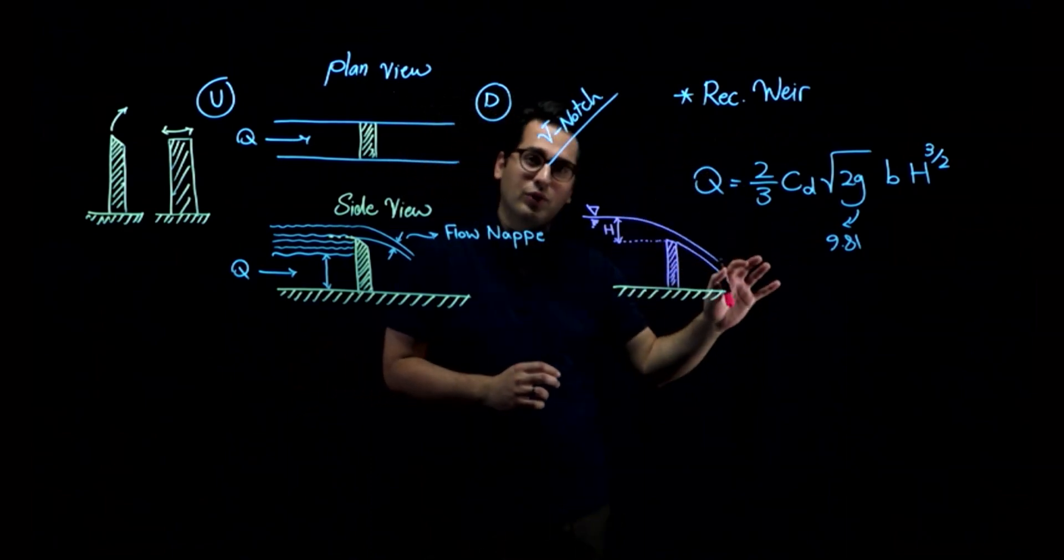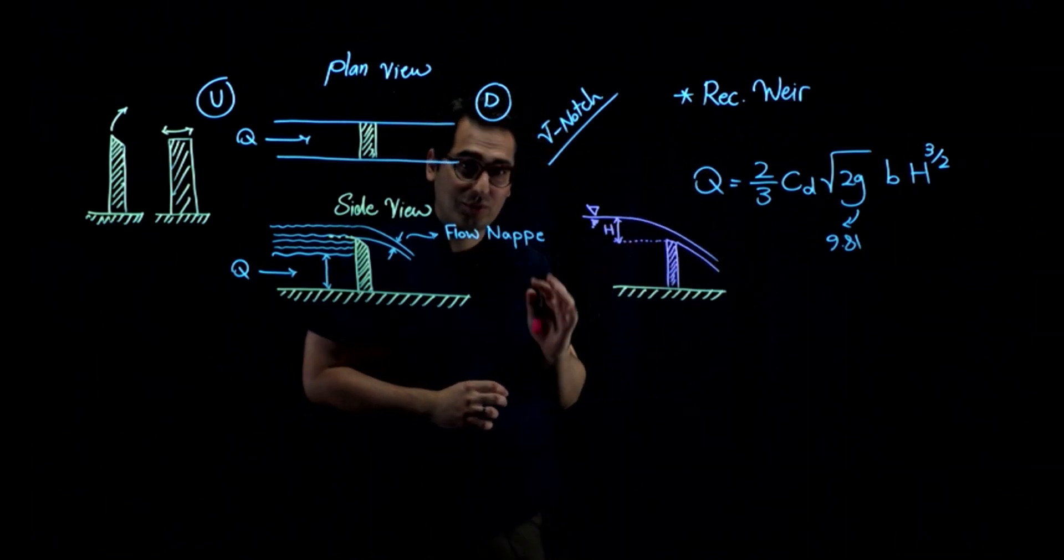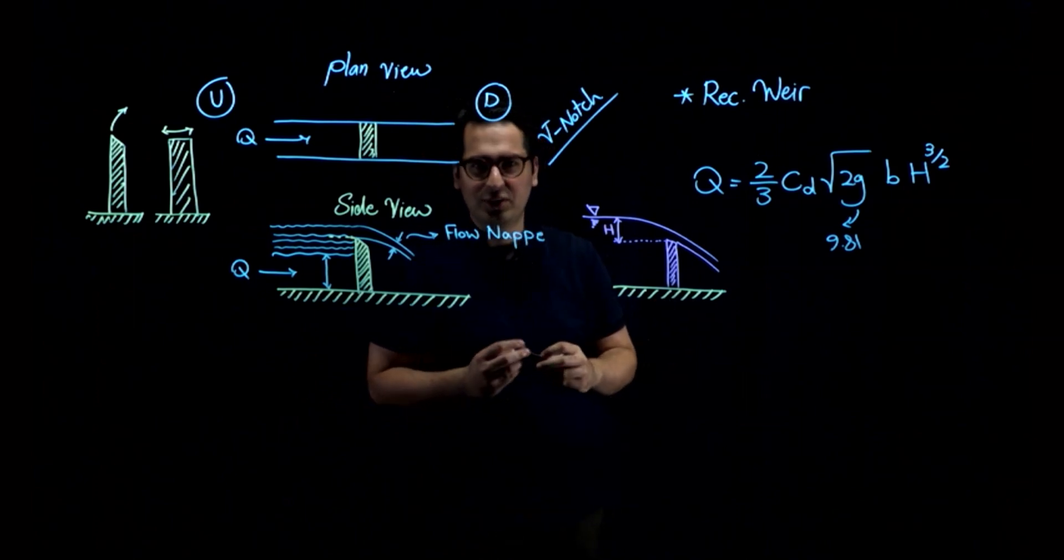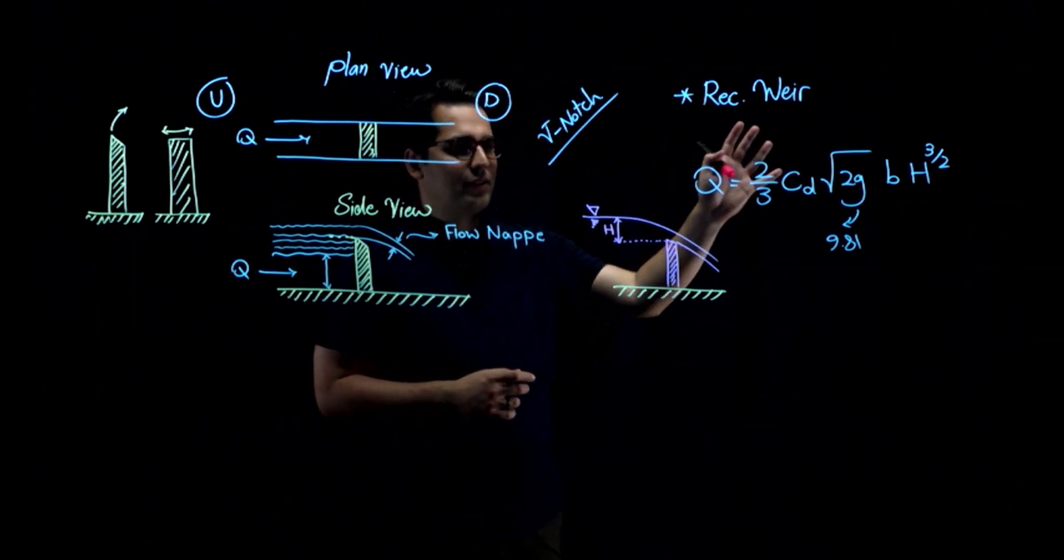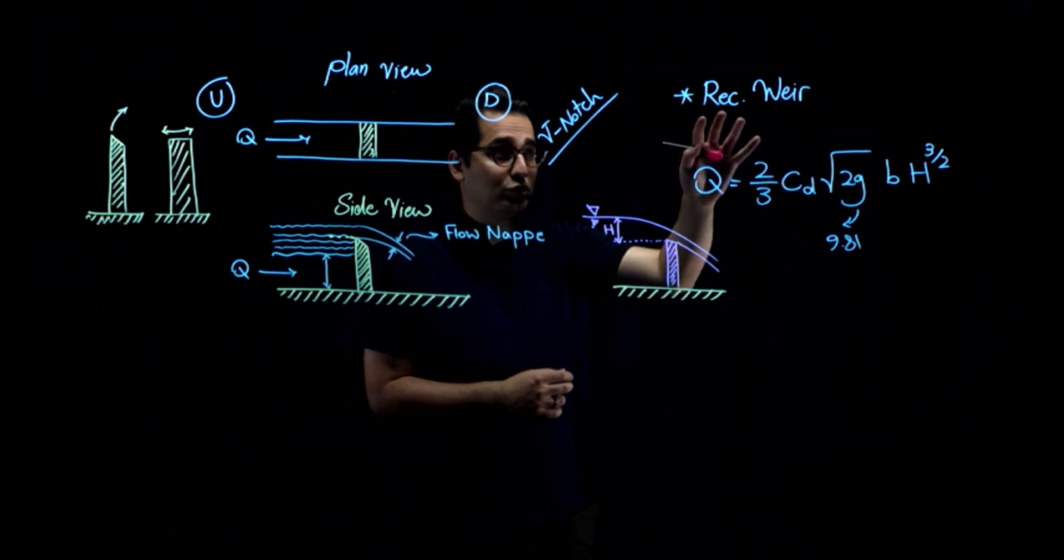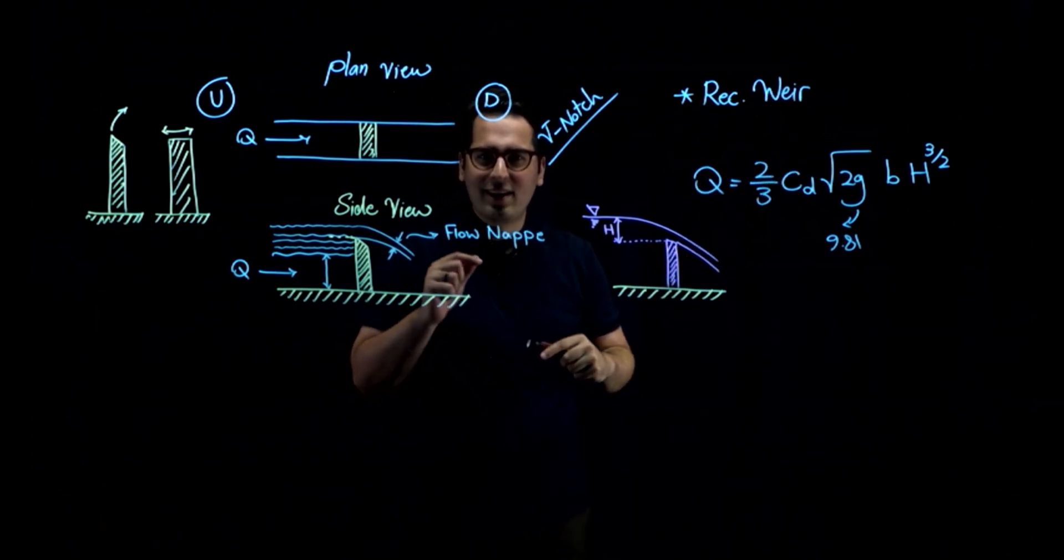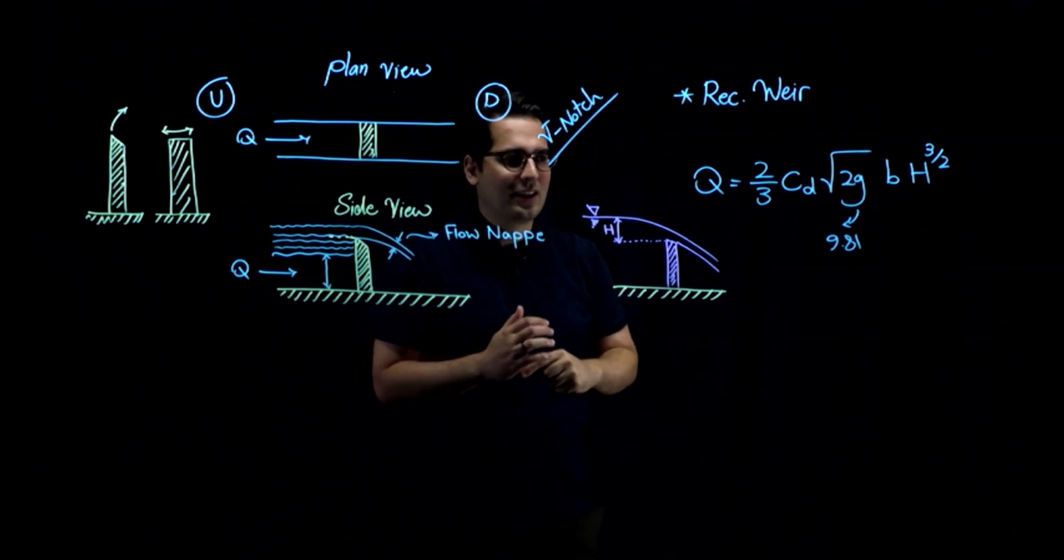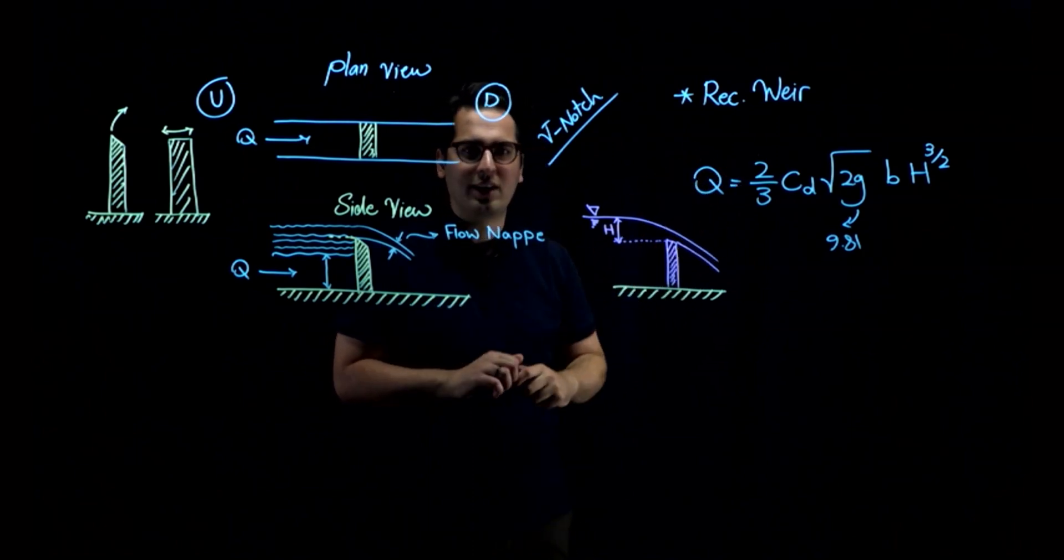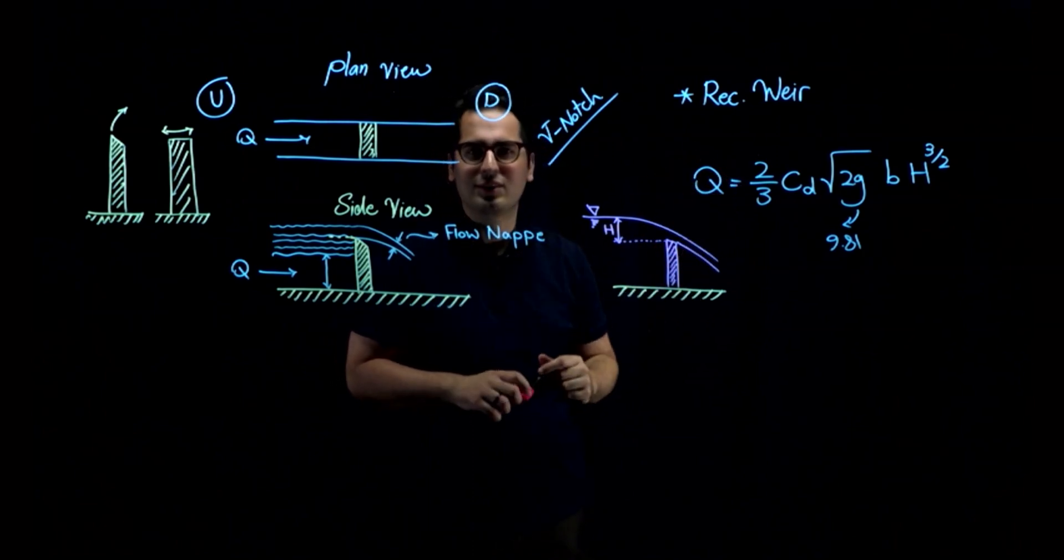What I want you to do is right now think about this equation and think about where this equation is coming from, which governing equation in fluid mechanics and water resources engineering I have used to derive this equation. And can we do the same thing for triangular weirs or other types of weirs or not? Leave a comment and let me know which governing equation I have used to derive this equation.